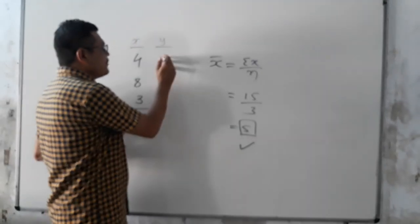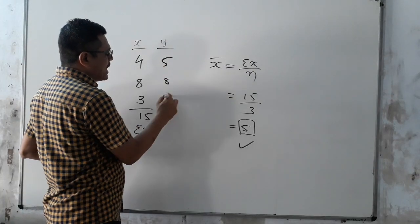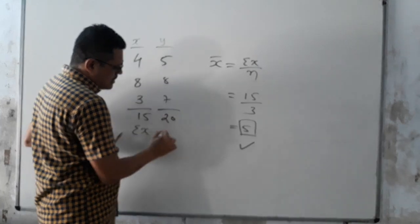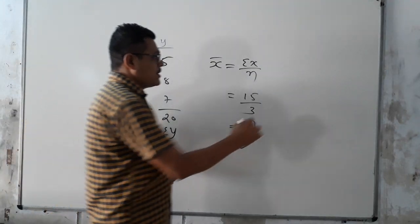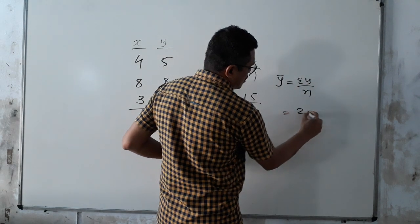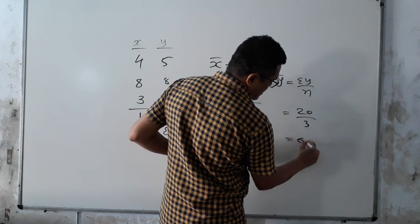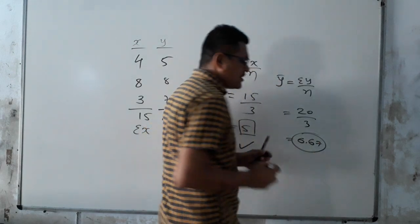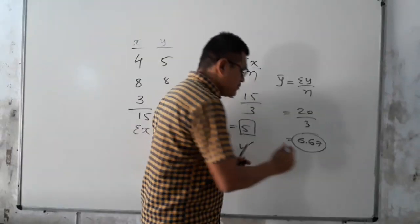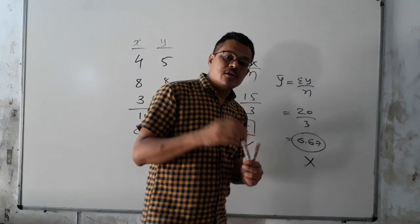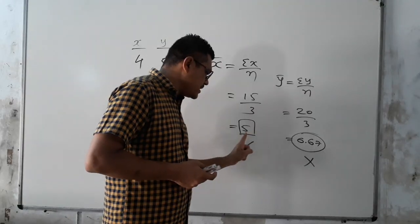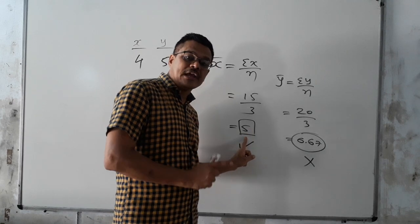And suppose Y. We are assuming Y values as 5, 8, 7, 20. ΣY is called for Sigma Y. So Ȳ = ΣY upon N = 20 upon 3, which means 6.67. So here, the mean is a fraction, and we use method number 2 when mean is NOT a fraction.